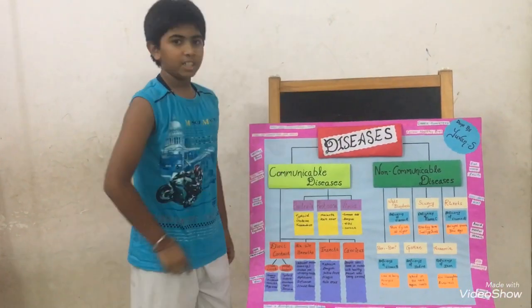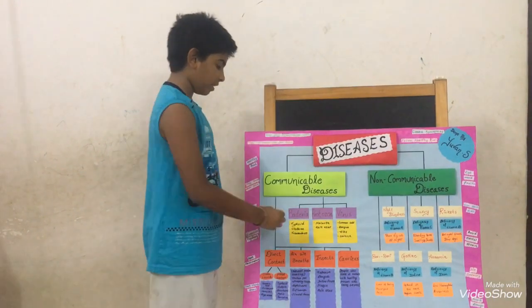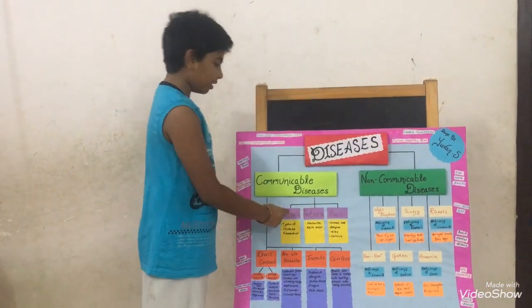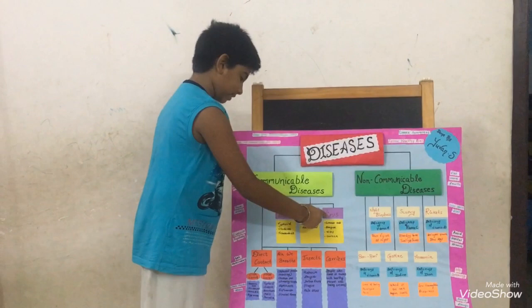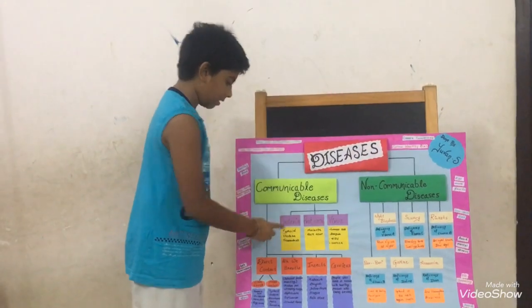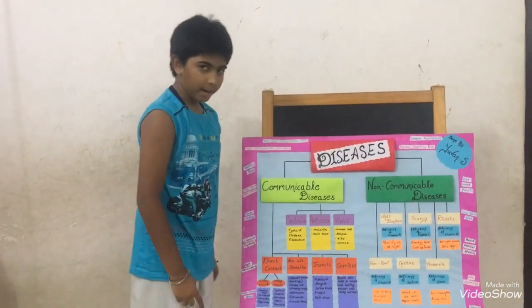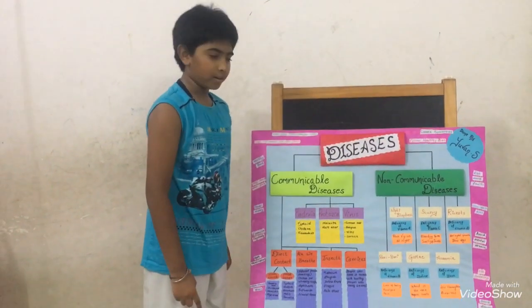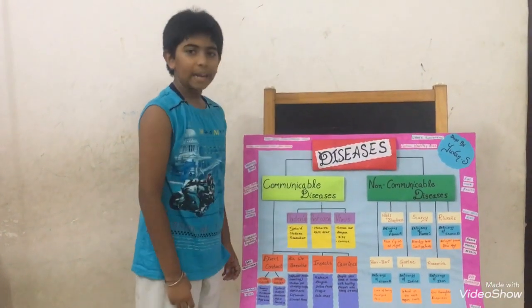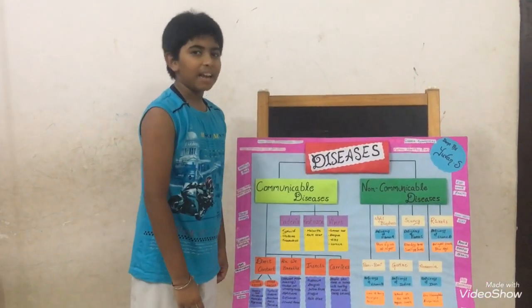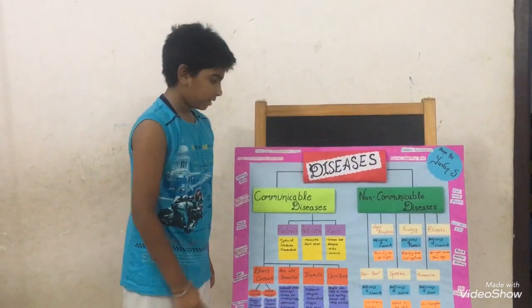Communicable disease spreads from one person to another, in terms of bacteria, protozoa, and virus. The examples of bacteria are typhoid, cholera, and tuberculosis. The examples of protozoa are malaria and kala-azar.